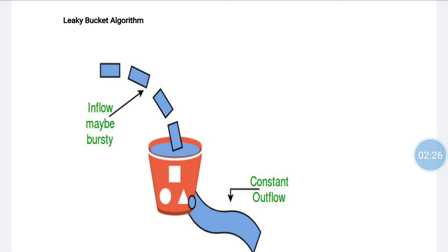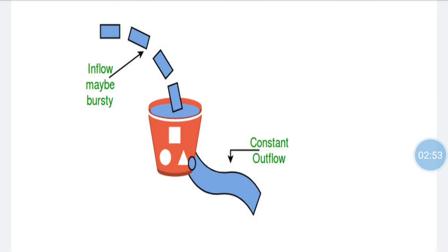Similarly in a network, a technique called leaky bucket can smooth out heavy traffic. Heavy chunks are stored in the bucket and sent out at an average rate. The bucket has a hole in the bottom so water leaks at a fixed rate. The pouring rate of water can vary, but the leaking water rate is constant.